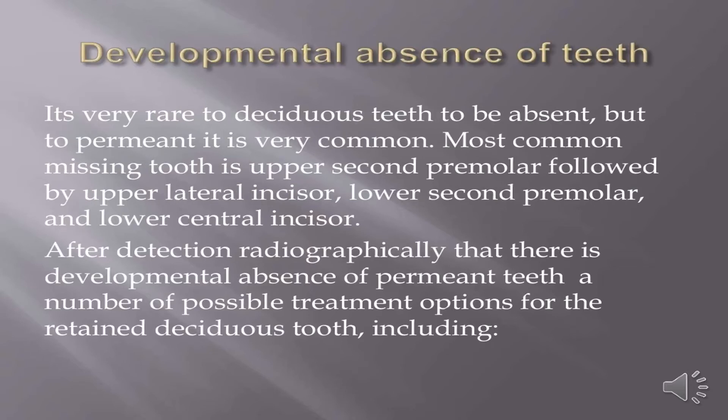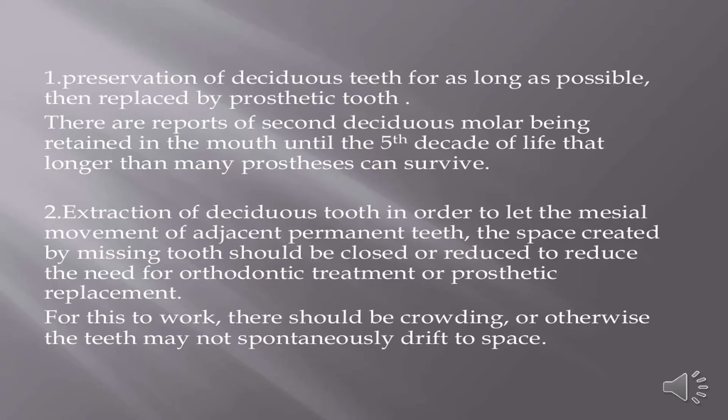It is very rare for deciduous teeth to be absent, but for permanent teeth it is very common. The most common missing tooth is the upper second premolar, followed by the upper lateral incisor, lower second premolar, and lower central incisor. After radiographic detection of developmental absence of permanent teeth, one treatment option is preservation of the deciduous tooth for as long as possible, then replaced by a prosthetic tooth. There are reports of second deciduous molars being retained until the fifth decade of life — longer than many prostheses can survive.